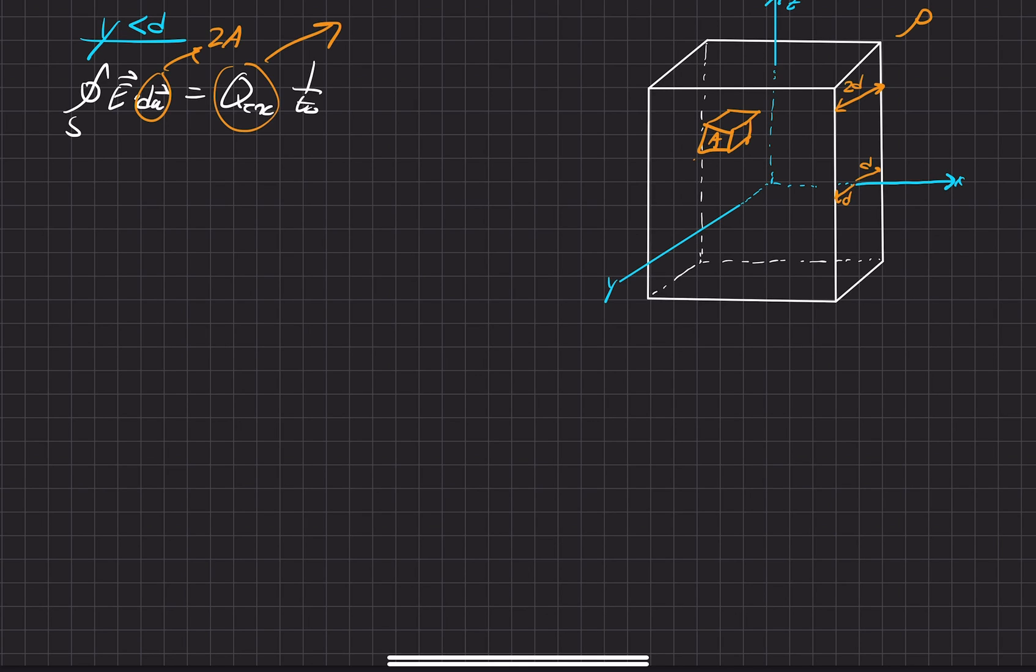And our charge enclosed is equal to rho times the area times the length. And then, like I said, there's a length y on the front and a length negative y on the back. So that total length is just going to be 2y.